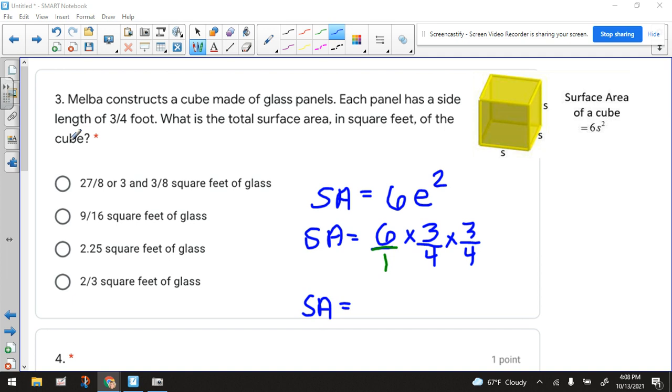Recall that the formula for surface area of a cube, I have it right here, it is six times the side squared. Or, I prefer to use an E. Why? Because this kind of looks like the number five when you write it.